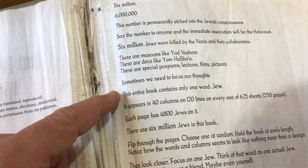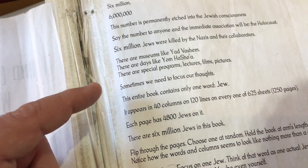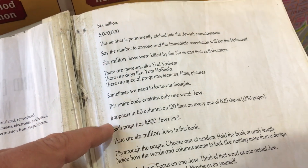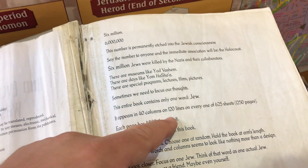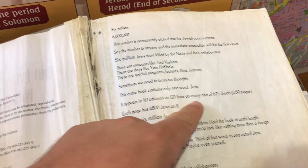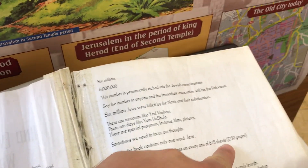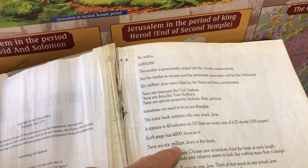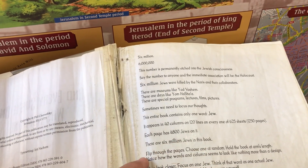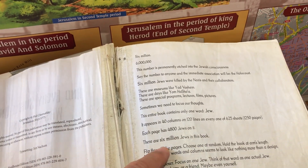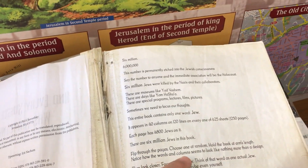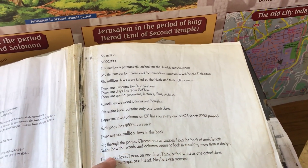Sometimes we need to focus our thoughts. The entire book contains only one word: Jew. It appears in 40 columns and 120 lines. There are 625 sheets for 1,250 pages. Each page has 4,800 Jews on it. There are 6 million Jews in this book. Flip through the pages. Choose one at random. Hold the book at arm's length.